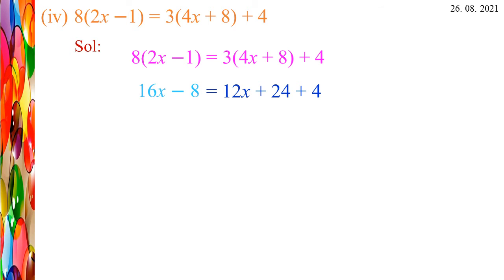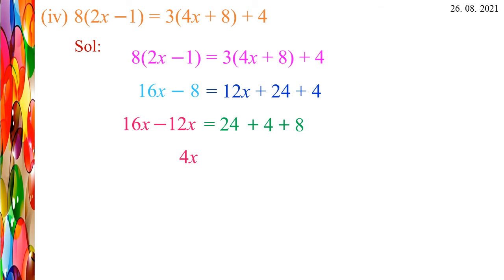Now we need to separate the variable and constant terms. 16X - 12X = 24 + 4 + 8. Transposing 12X to the LHS, it becomes -12X. Transposing -8 to the RHS, it becomes +8. So we get 16X - 12X = 24 + 4 + 8. Subtracting: 16 - 12 = 4, so 4X = 24 + 4 + 8. Adding: 24 + 4 = 28, and 28 + 8 = 36. So 4X = 36.